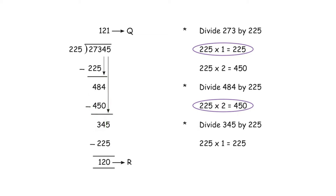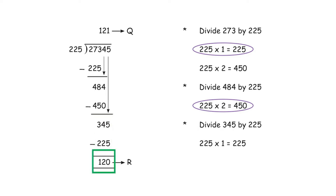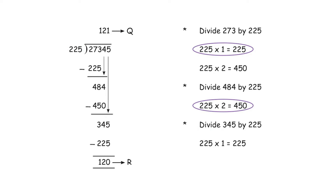Bring the last digit, 5, down to get 345. The last step is to divide 345 by 225: 225 × 1 = 225, the closest number. Final subtraction: 345 − 225 = 120. That's the remainder. So 27,345 apples can be packed into 225 boxes with 121 apples in each box and 120 apples left over.